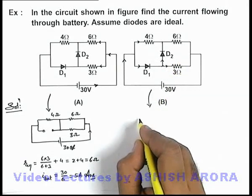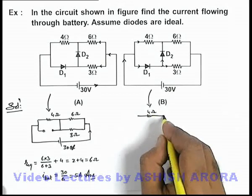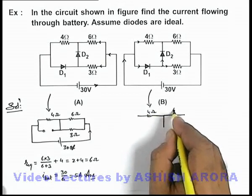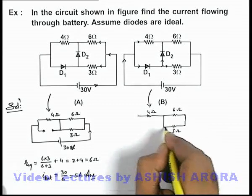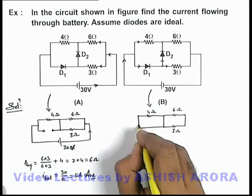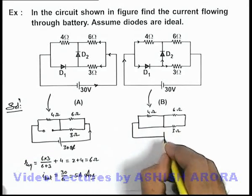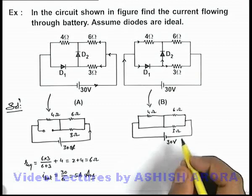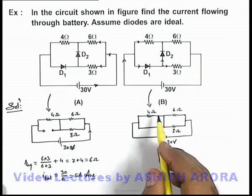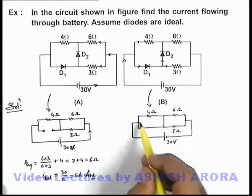So the equivalent circuit here we can draw as this will be the 4 ohm resistance and here 6 ohm resistance and 3 ohm resistances are there. And this D1 will act as a straight wire because it is forward bias and the battery of 30 volt is connected across the circuit. And in this situation you can see that due to forward biasing of diode D1 this 4 ohm is short circuited.